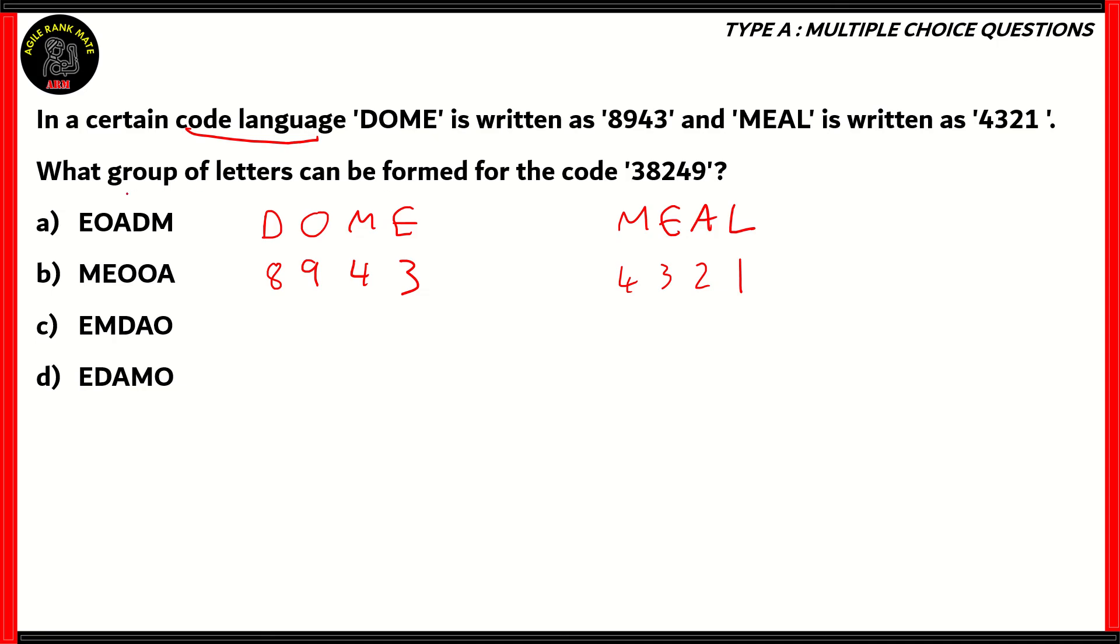Now, we need to find out what group of letters can be formed for the code 38249. 3 represents E. That means option B turns out to be incorrect because it starts with M. 8 is represented by D. That means option A and C are incorrect because they contain O and M respectively. So, therefore, the only correct option is option D, EDAMO. 2 stands for A, 4 stands for M, 9 stands for O. So, it turns out that option D, the last option, is the right option. All we have to do is write the code along with the word, then find out the relation between the code and the letter or the word, and then use that relation in order to find out the code for a particular word or a word or group of letters for the particular code.